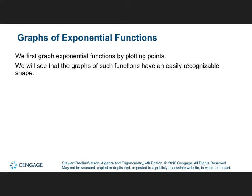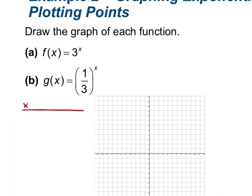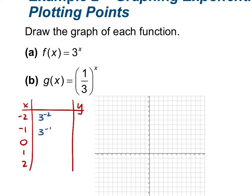When we graph these functions, it is a lot easier to make ourselves a function table. If we are given f of x is equal to 3 to the power of x, we can set up x and y columns and plug in values for x: negative 2, negative 1, 0, 1, and 2. This gives us 3 to the power of negative 2, negative 1, 0, first power, and second power. So: 3 to the negative 2 is 1 ninth; 3 to the negative 1 is 1 third; 3 to the power of 0 is 1; 3 to the first power is 3; and 3 to the second power is 9.